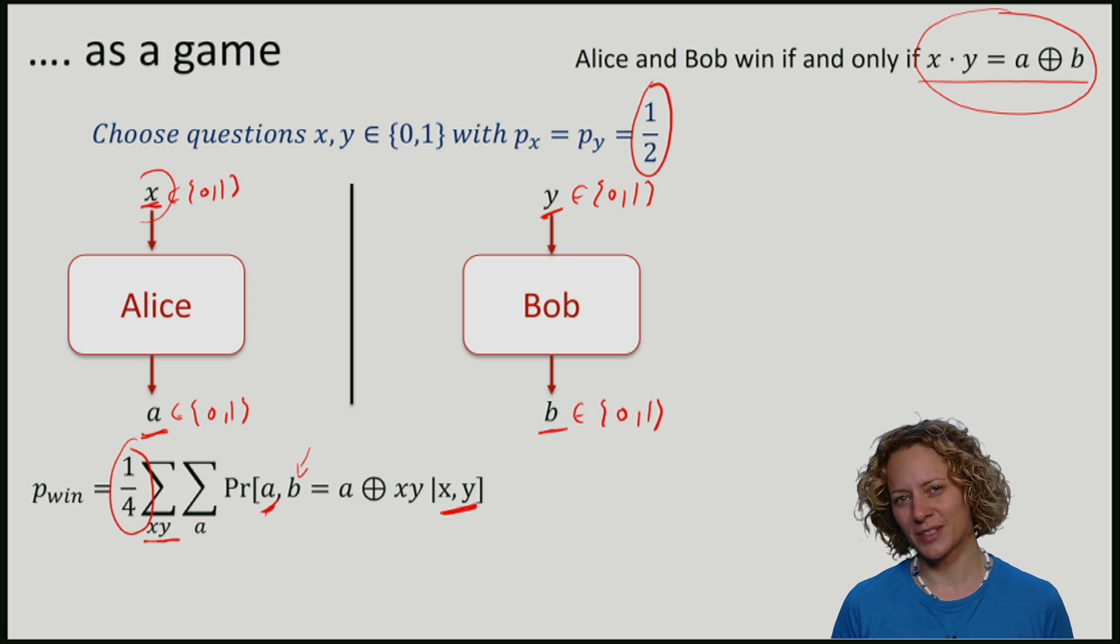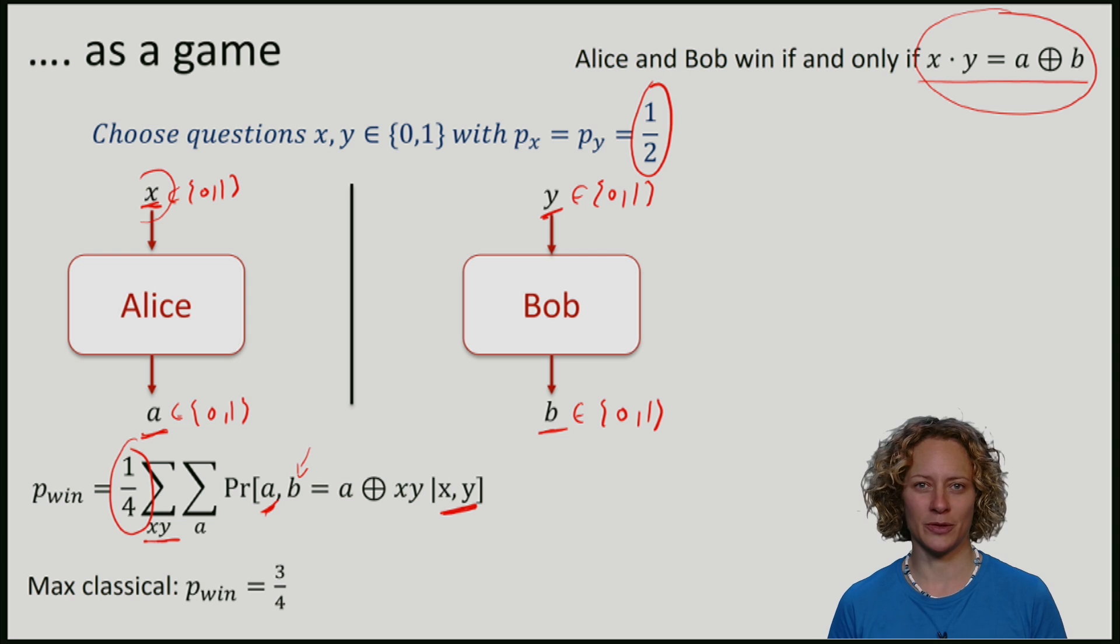It turns out that if Alice and Bob are classical, a classical strategy, which you can think of as just a lookup table that tells Alice and Bob which answers to give for which questions, then the maximum probability that they can achieve is three quarters.